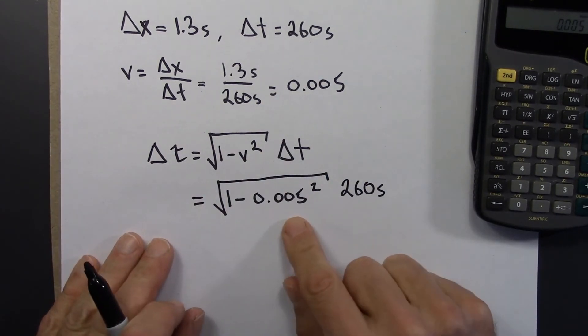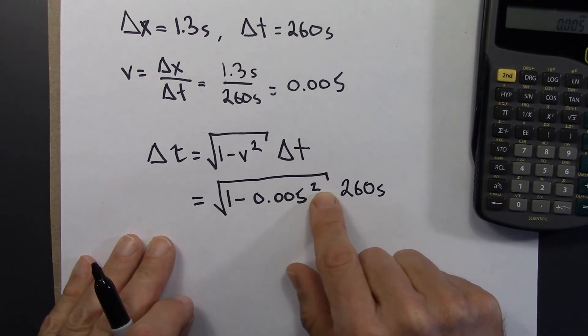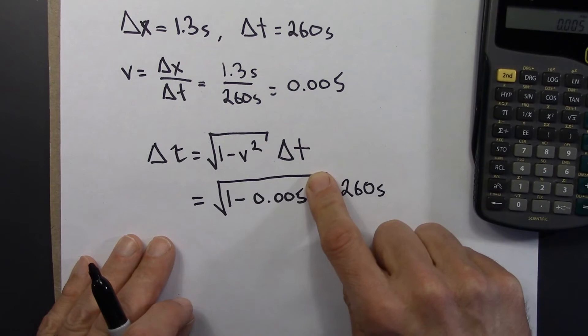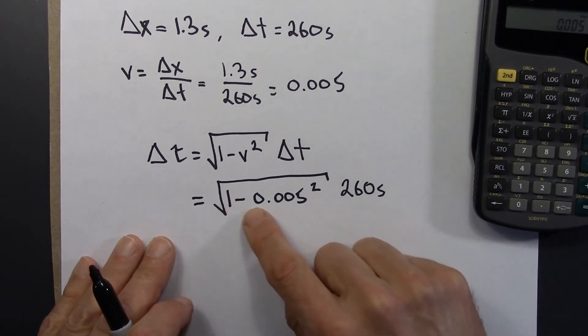So this, as you might have found when you did the quiz, requires keeping a lot of digits on your calculator. So 0.005 squared is very close to 0. Squared, you get closer to 0 still. 1 minus something that's very close to 0 is very close to 1.